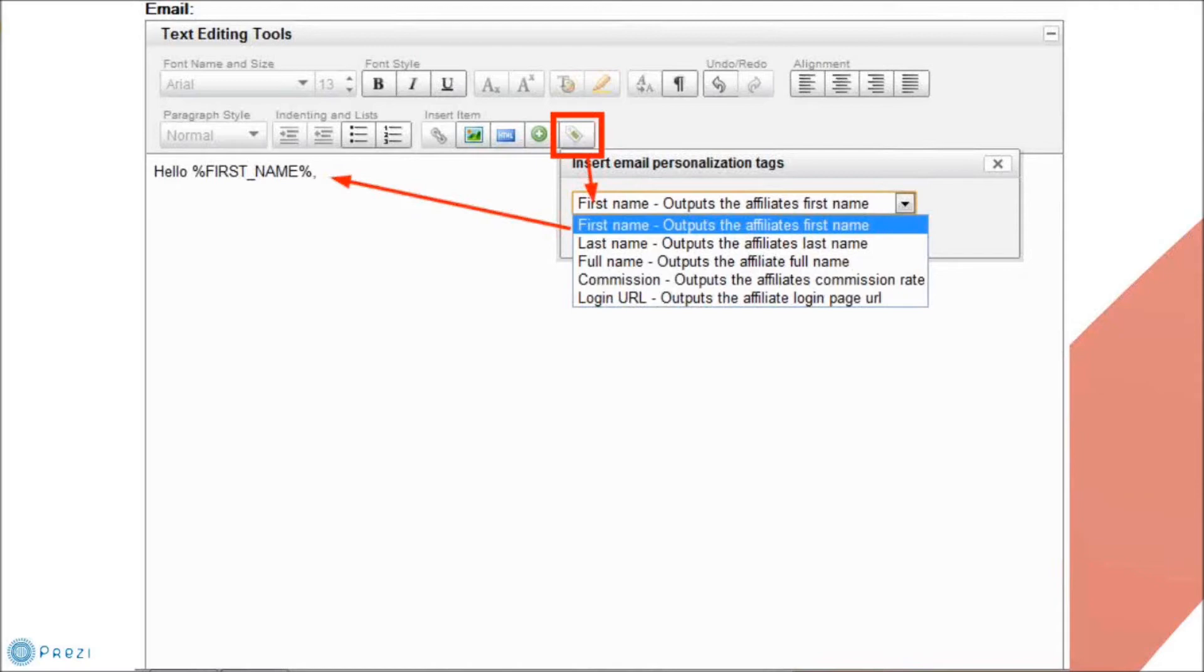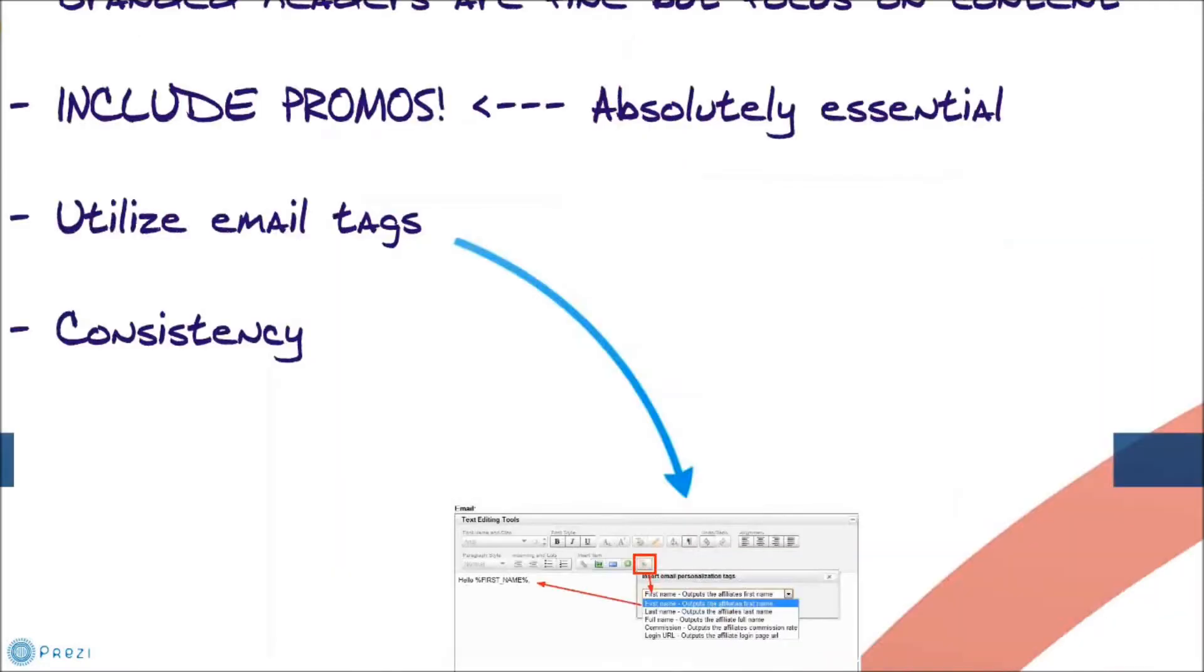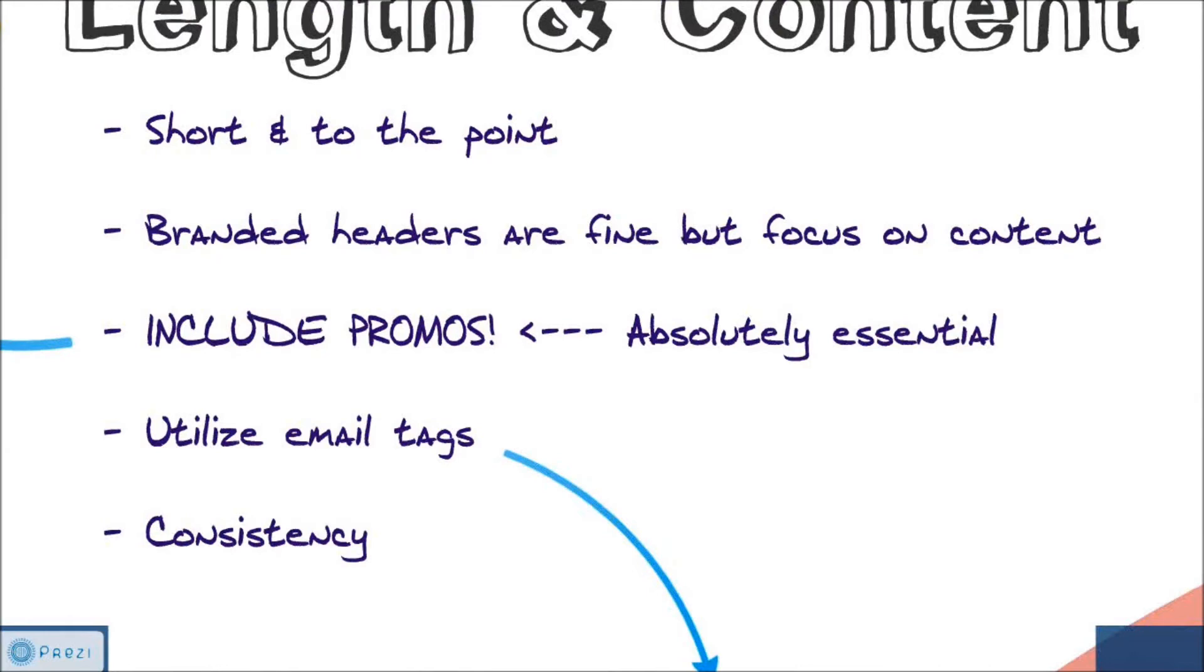So the two really important ones here: include promotions and utilize email tags. Those are essential for any email that's being sent out to your affiliates.